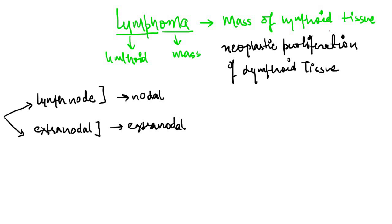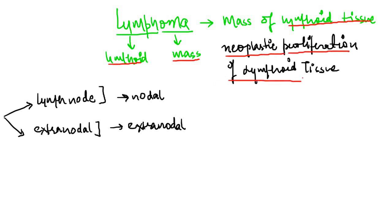The word lymphoma is made up of two words: lymphoid, which means the lymphoid tissue, and oma, which refers to mass. Therefore, lymphoma is nothing but a mass of lymphoid tissue, and obviously it is formed as a result of the neoplastic proliferation of the lymphoid tissue.